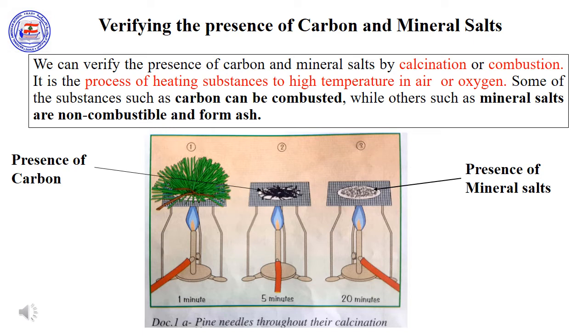Hence, the chemical elements constituting the organic matter are carbon and mineral salts, such as sodium, potassium, phosphorus, nitrogen, etc.